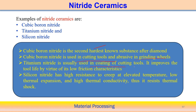Titanium nitride is used mainly for the coating of cutting tools. When you put a coating of titanium nitride on a cutting tool, it improves the tool life, and it is also known for having low friction characteristics. Silicon nitride has high resistance to creep at elevated temperature, and is associated with low thermal expansion and relatively high thermal conductivity, giving it good thermal shock resistance.